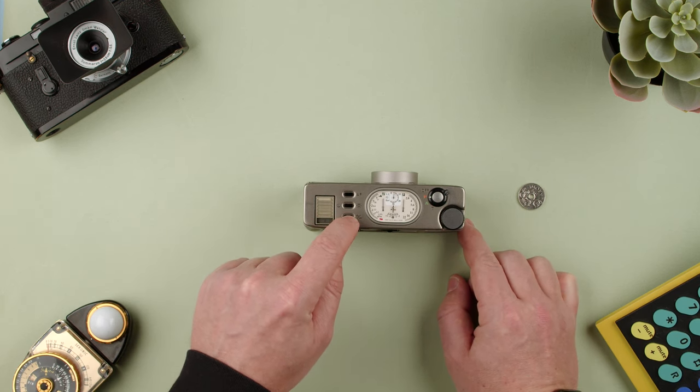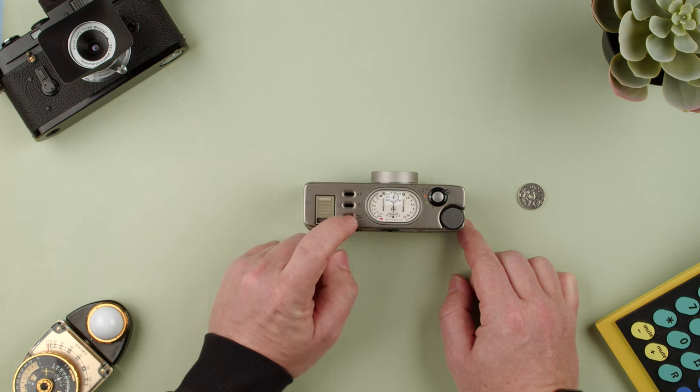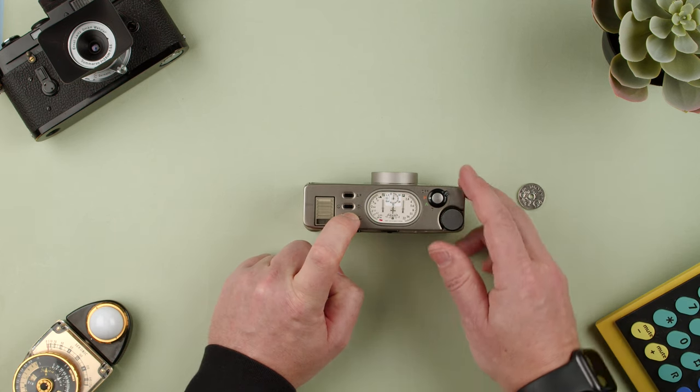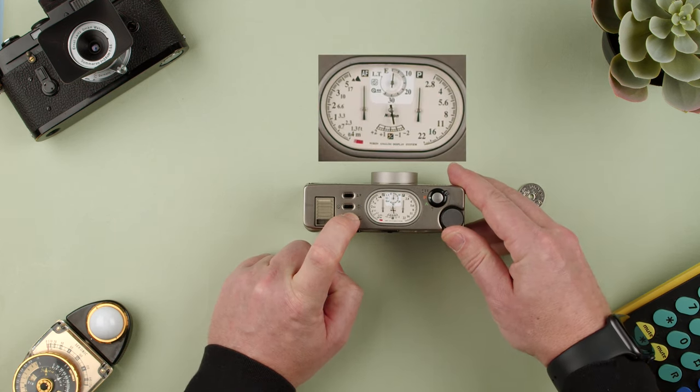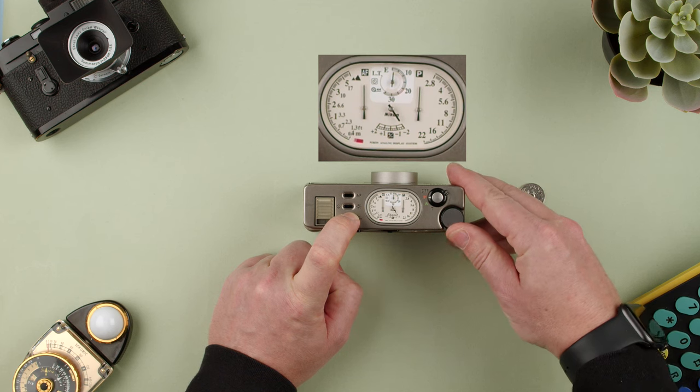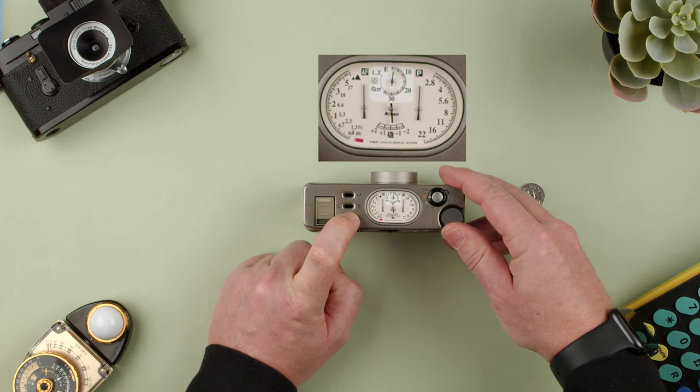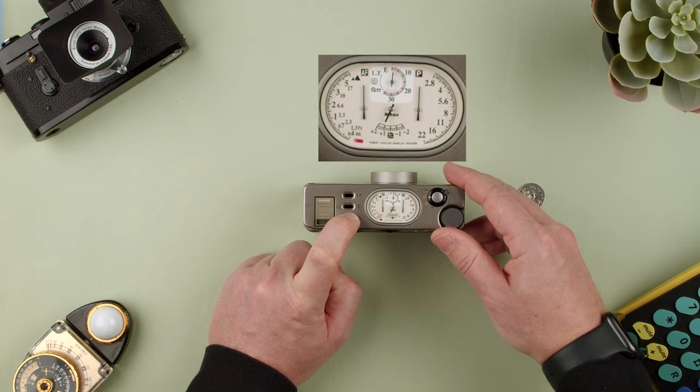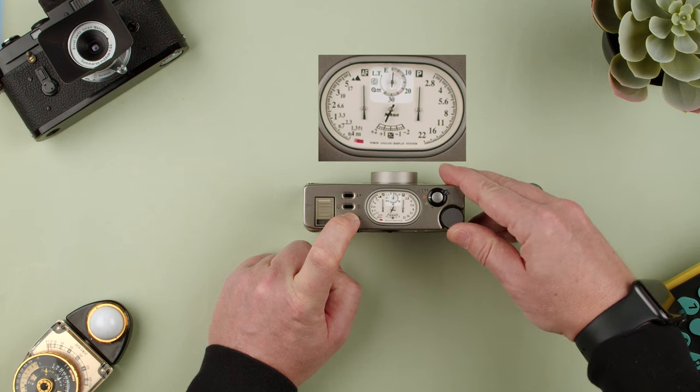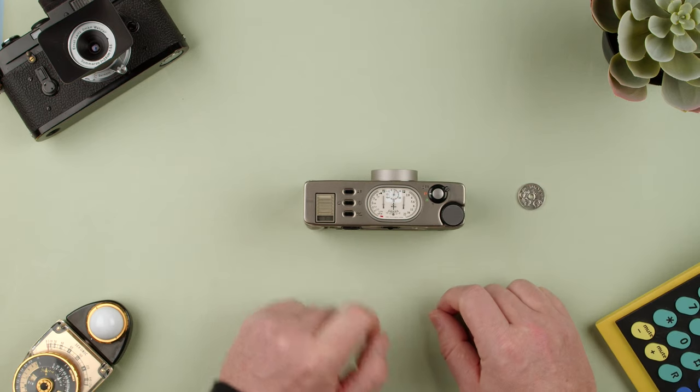Then we can use exposure compensation. That's good if there's something backlit. We press here and go one way to minus two, back to zero, and all the way to plus two. That's a way to push or pull your film.